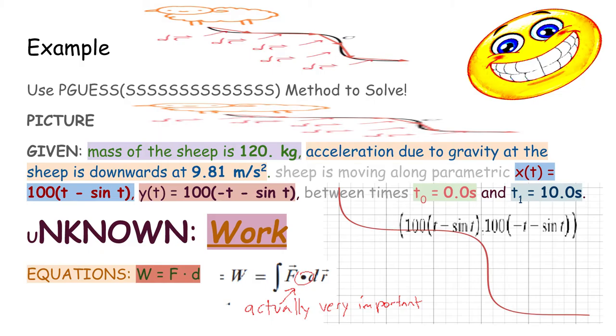We were given that the mass of the sheep is 120 kilograms, and that the acceleration due to gravity at the sheep is downwards at 9.81 meters per second squared. The sheep is moving along the parametric function x(t) = 100(t - sin t), and y(t) = 100(-t - sin t). Between times t0 = 0.0 seconds and t1 = 10.0 seconds.